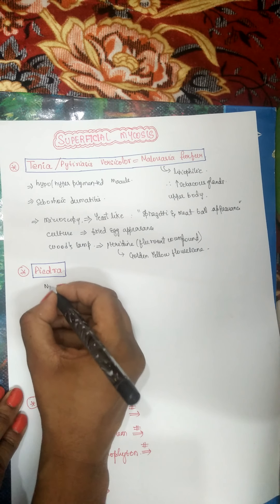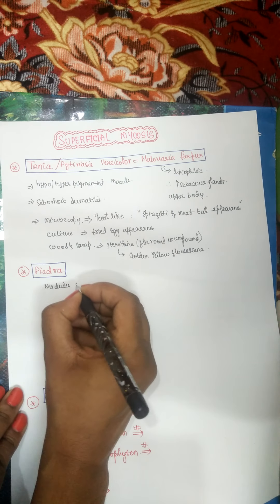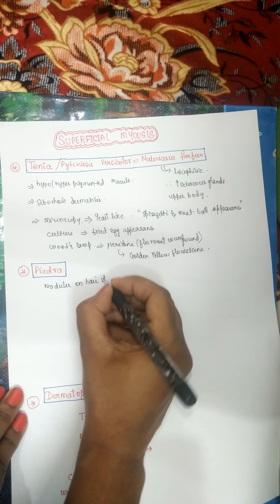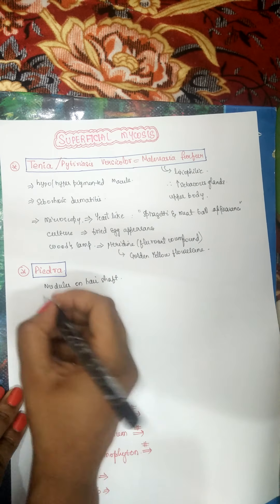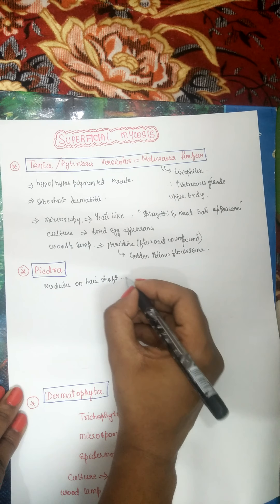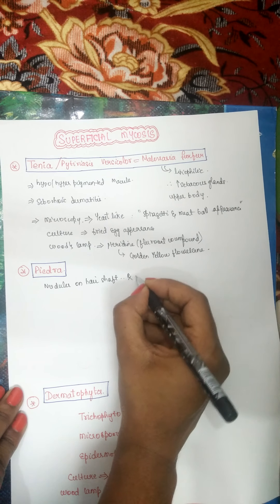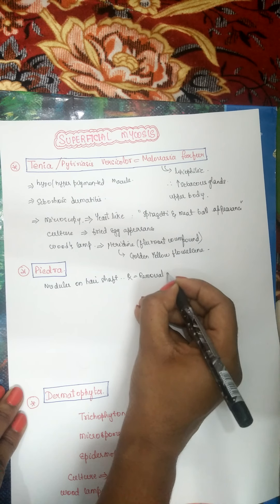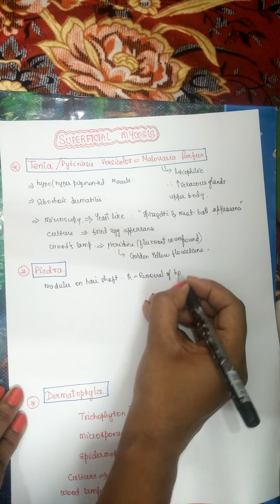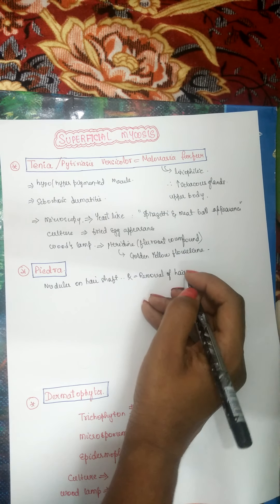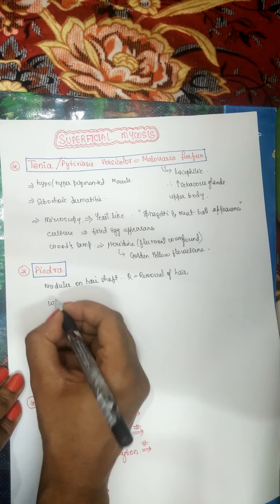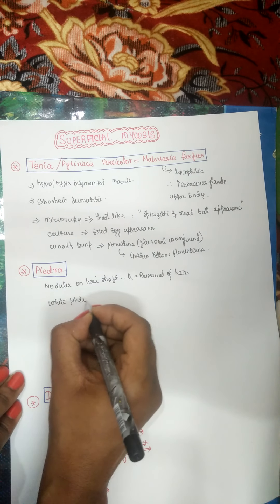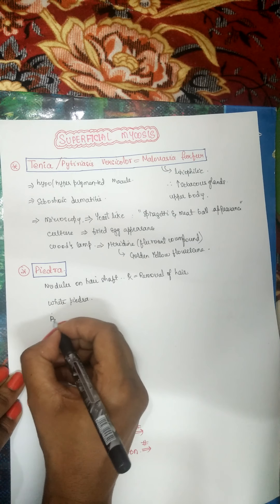Coming to piedra — piedra causes nodules on hair. When piedra occurs, the only actual treatment is removal of the hair; removal of the hair causes disappearance of the infection. There are two types of piedra: white piedra and black piedra.